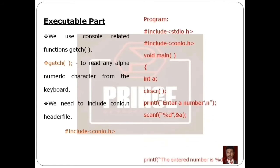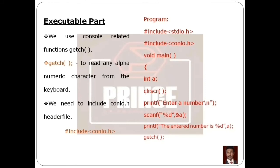Before the program ends, after displaying the output, there is a getch function. Add getch, then open parenthesis, then close parenthesis, then semicolon. After all instructions are complete, close the main function with a right curly brace.